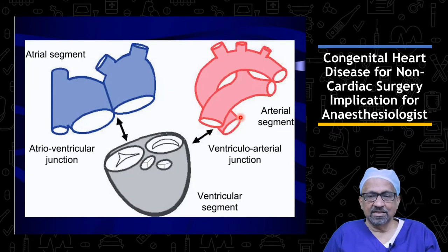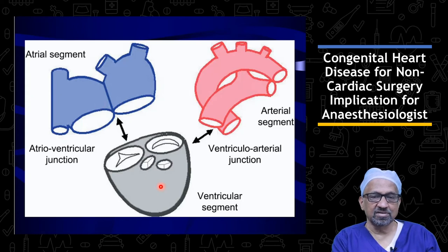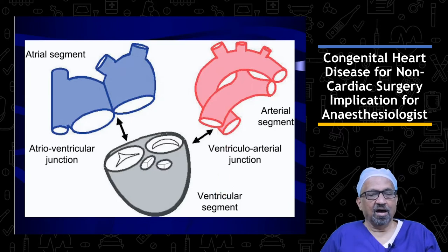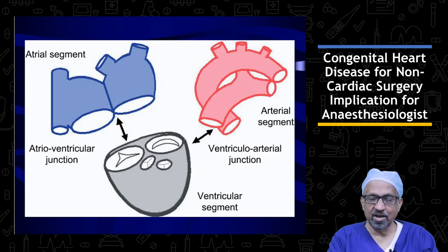If you look at the segmental analysis, the heart is divided into three segments: the atrial segment, the ventricular segment, and the arterial segment. The connection of these segments influences the type of congenital heart disease we may encounter in clinical practice.